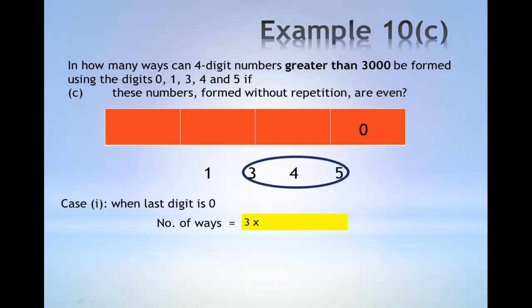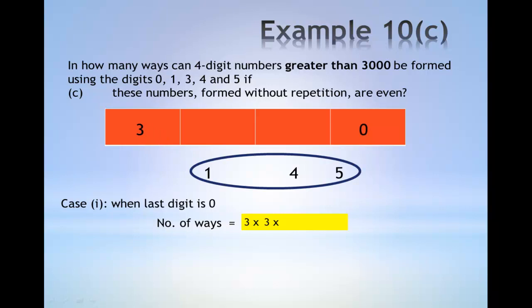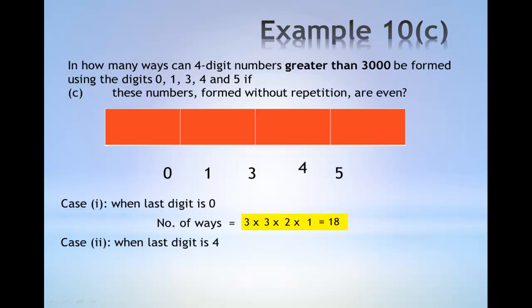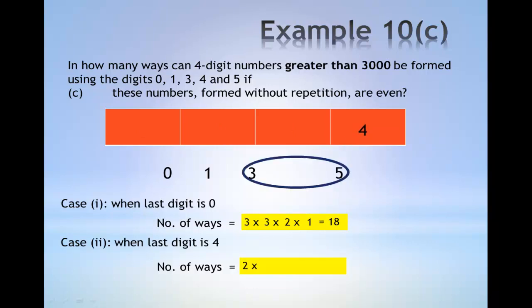The first digit can be any of the 3 digits 3, 4 and 5 — for example, 3. The second digit can be any of the remaining 3 digits: 1, 4 or 5 — for example, 4. The third digit can be any of the remaining 2 digits — for example, 1. The last digit must be 0, which is why we multiply by 1. This gives us a total of 18 ways.